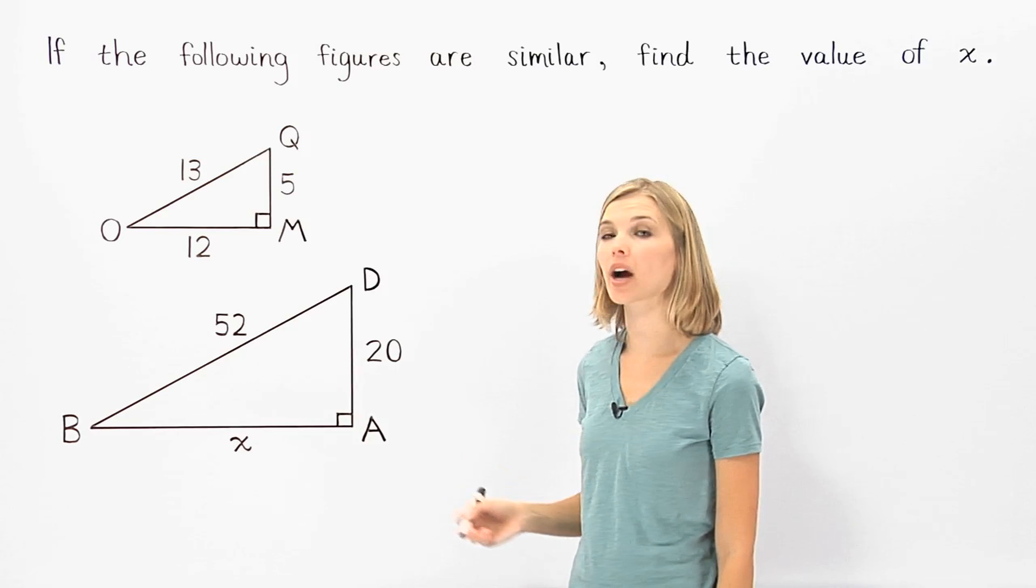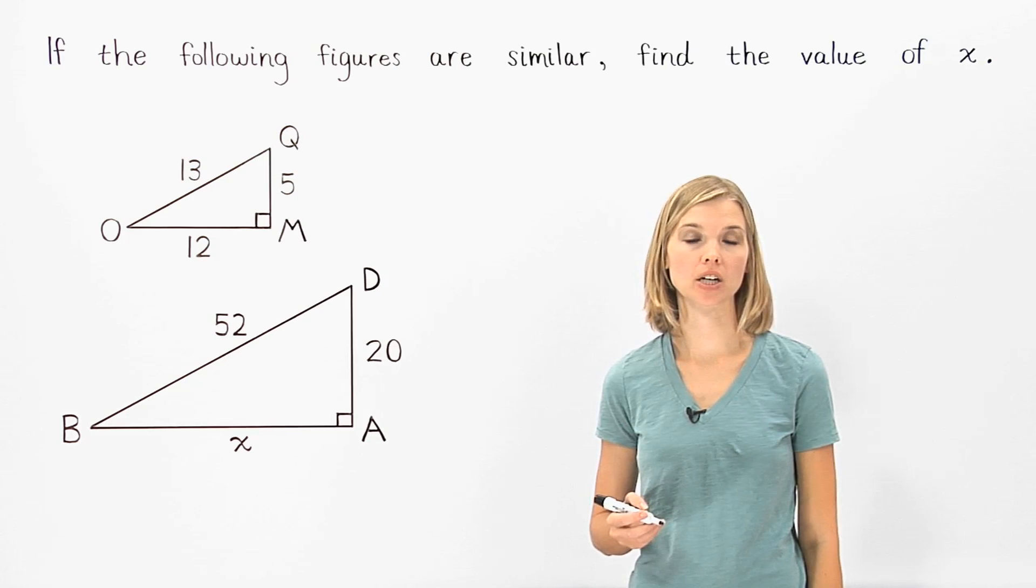Remember that if two triangles are similar, the ratios of their corresponding sides are equal.